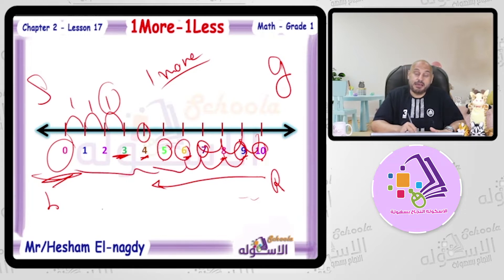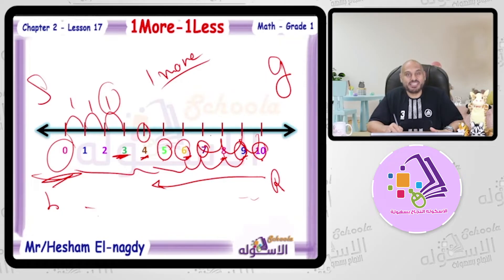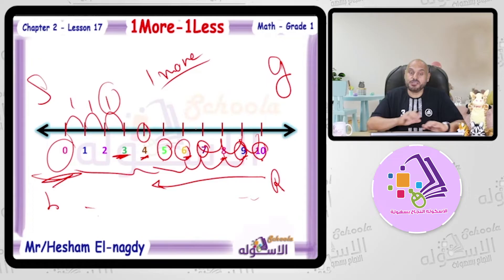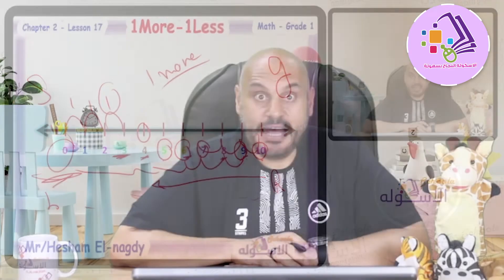As long as we count back, that gives us one less. Count forward gives us one more. Today's session we will complete and talk about one more and one less.